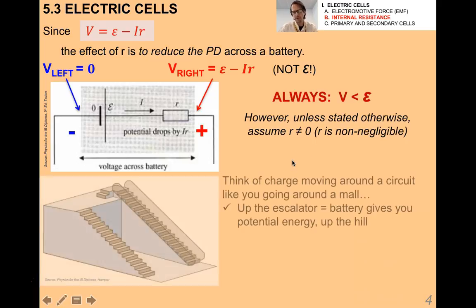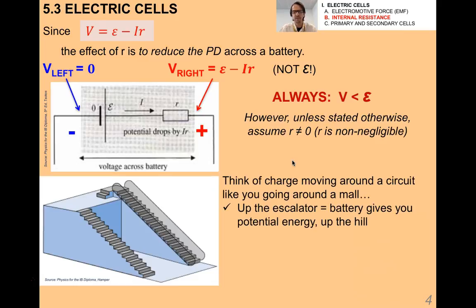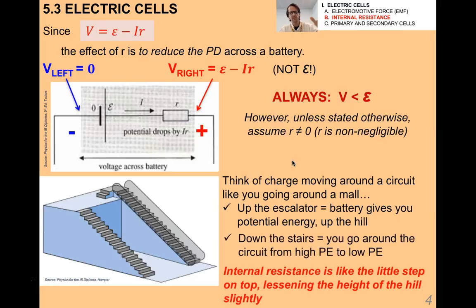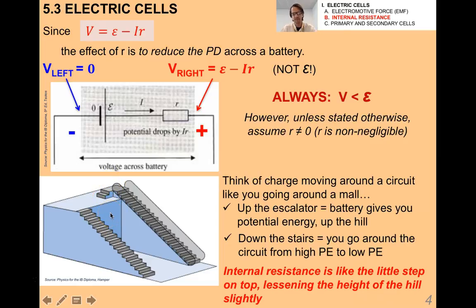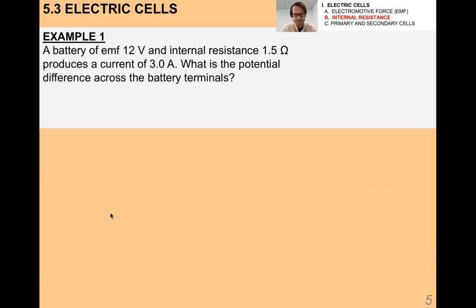Unless stated otherwise, we assume the internal resistance is zero. You can think of charge moving around a circuit like going around a shopping mall — going up the escalator is like a battery giving you potential energy and pushing you up the hill; coming down the stairs happens naturally since you go from high to low potential energy. Internal resistance is like a little step on top that lessens the height of the hill slightly, so instead of going up the full height you only go up that height minus that small bit.